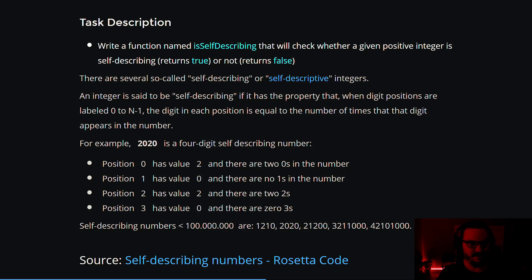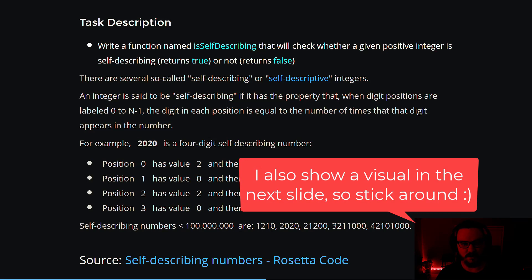An integer is said to be self-describing if it has the property that when digit positions are labeled zero to n minus one, the digit in each position is equal to the number of times that that digit appears in the number. That may not make perfect sense, but we're going to walk through an example here and you'll be able to see exactly what we're talking about.